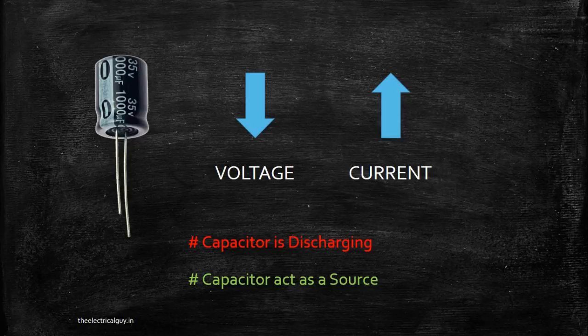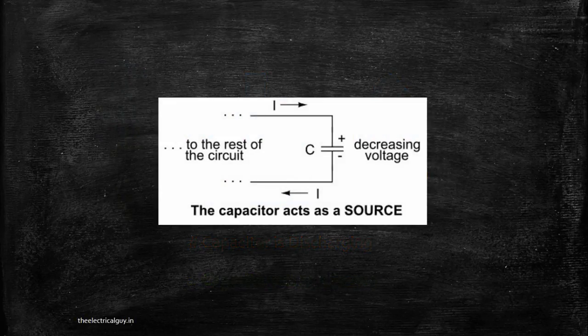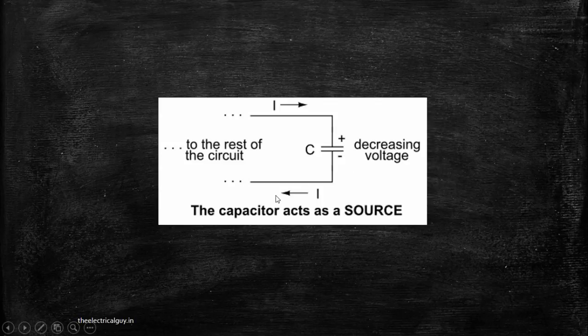This simple device can act as both a source and a load. In the previous image, current was entering from the negative terminal. But now, current is leaving from the negative terminal, meaning the capacitor is acting as a source and is supplying current to the rest of the circuit.